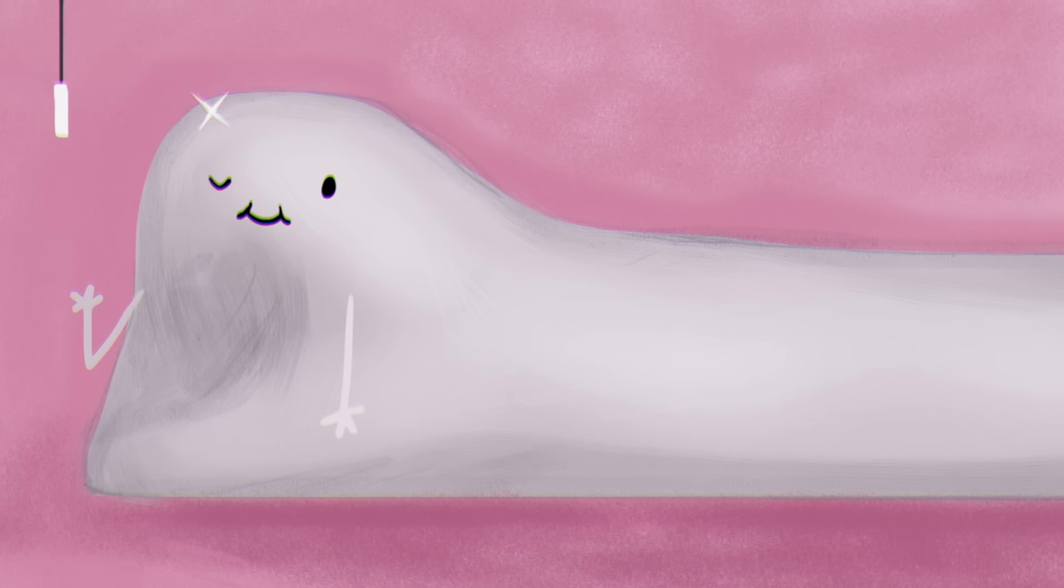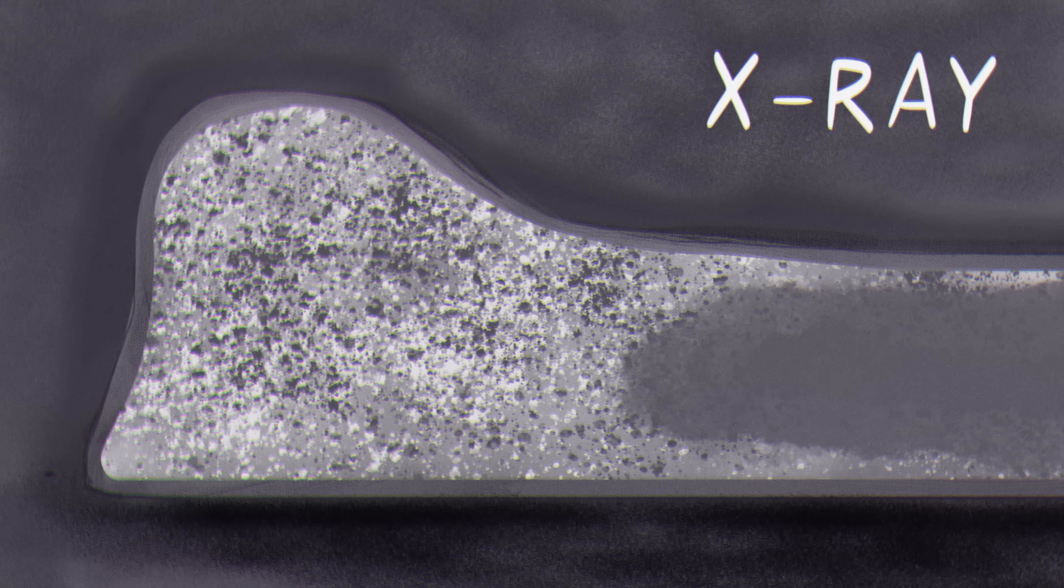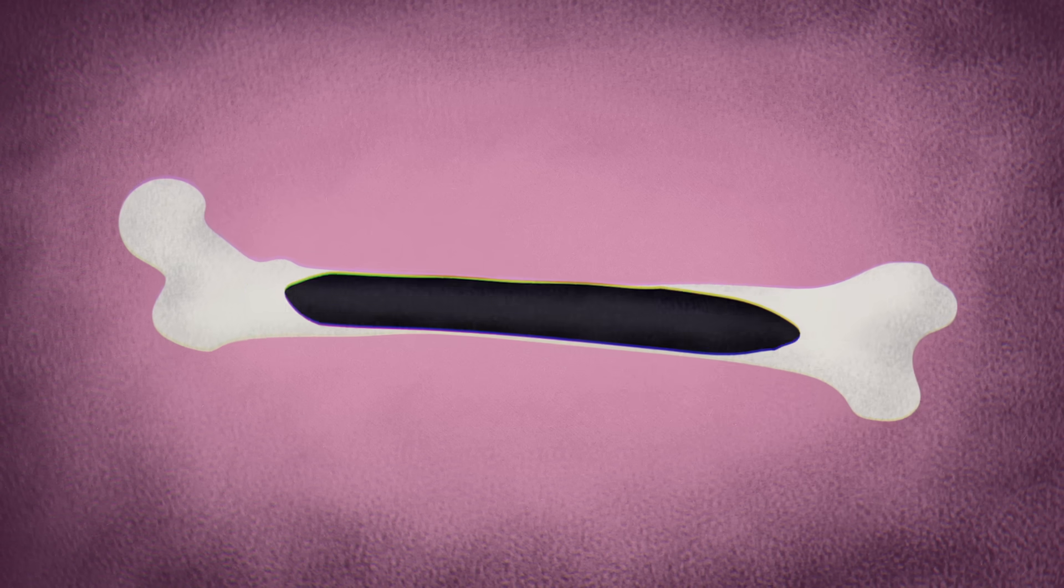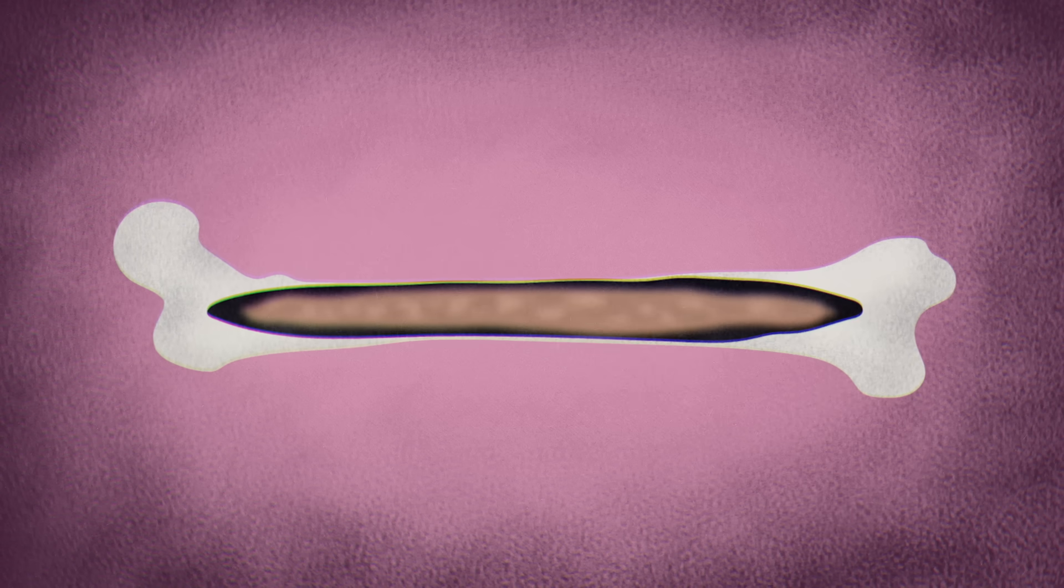Bones might seem rock solid, but they're actually quite porous inside. Large and small blood vessels enter through these holes, and inside most of the large bones of your skeleton is a hollow core filled with soft bone marrow.